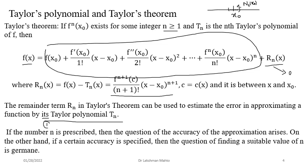There are two situations in the process of approximation. One: if n is given — someone specifies the degree of the Taylor polynomial — then the question is, what is the error or accuracy of that approximation? Two: if the degree of accuracy or the error bound is given, then how many terms do we need — what is the appropriate degree n of the Taylor polynomial to achieve that accuracy? We will solve problems based on both these situations.